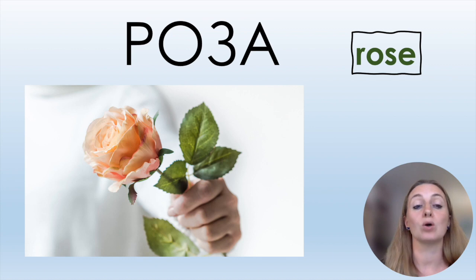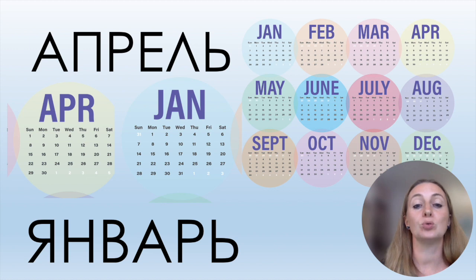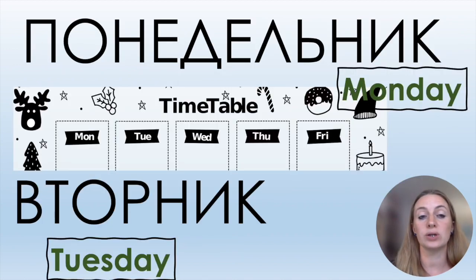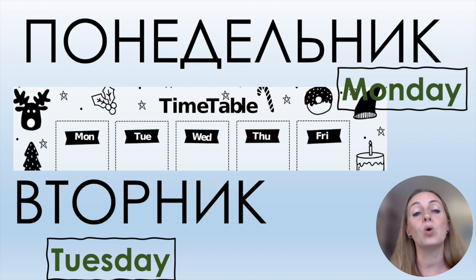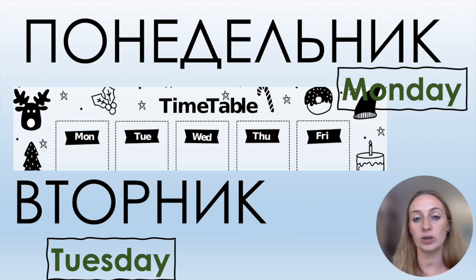Роза, роза. Минута, минута, минута — a very long word! For days of the week I give you two: Понедельник — the letter О is pronounced like А — понедельник. And the second one is Вторник — вторник.